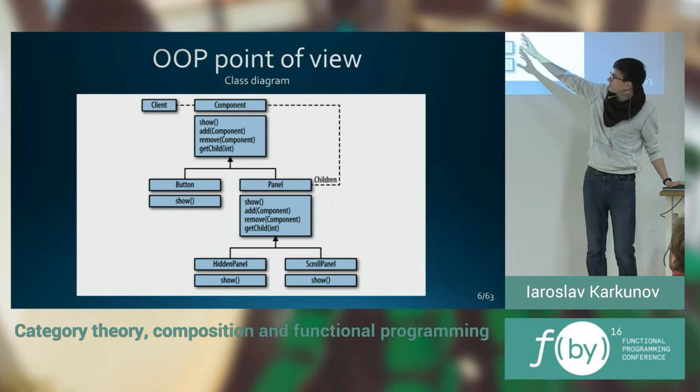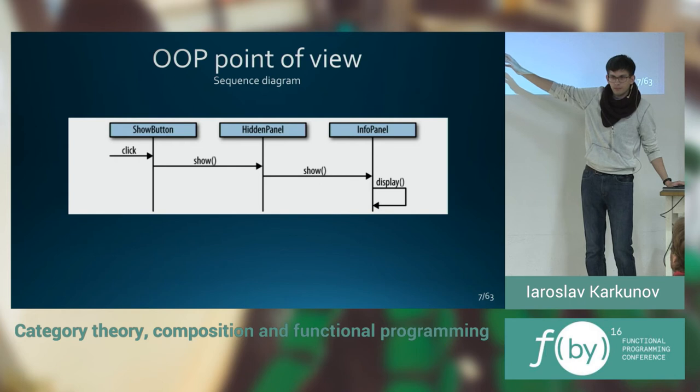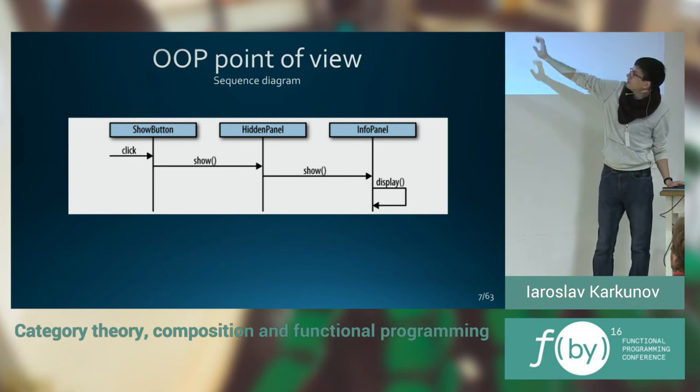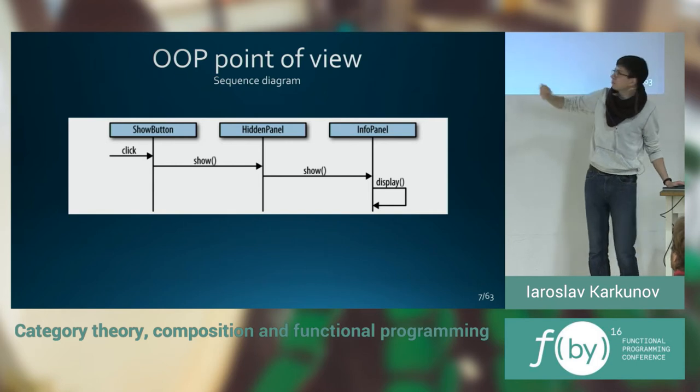Some inheritance among them. There is also a sequence diagram which shows us how those entities interact with each other. As you can see, we have the arrows. And arrows are like actions. And objects are like classes. And objects are connected with arrows.